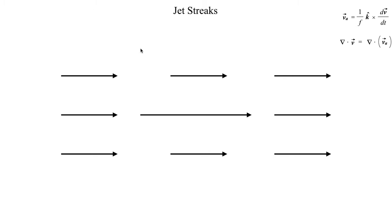First off, let's define what exactly a jet streak is. A jet streak is usually defined as a corridor or area of locally strong flow within a jet stream — that could be the subtropical jet or the polar jet. The whole idea behind a jet streak is that you've got an area of locally enhanced flow or a corridor of locally enhanced flow present within a jet stream of some sort.